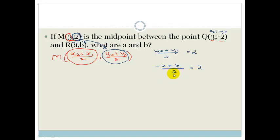we can say minus 2 plus B all over 2 is equal to 2. If we multiply both sides by 2 to get rid of this 2, we've got minus 2 plus B is equal to 4. Therefore, B is going to be 4 plus 2, which equals 6.